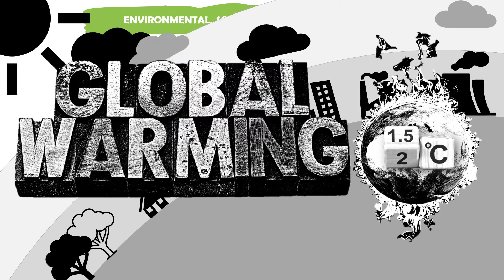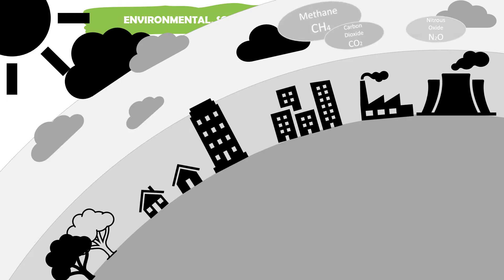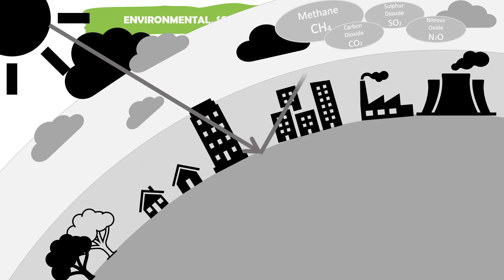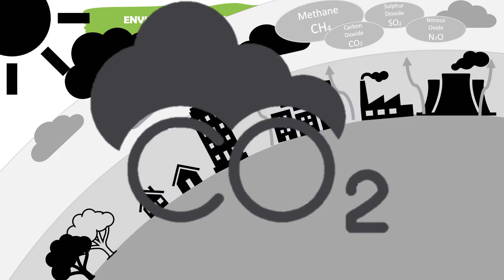Global warming is the increase in the average temperature of the Earth's atmosphere and oceans, which has been rising over recent years. The collection of carbon dioxide and other greenhouse gases in the atmosphere is the main driver of global warming. The gases absorb the sunlight reflecting off the Earth's surface and trap heat which is unable to escape, heating up the Earth and causing the greenhouse effect. CO2 has increased because of the burning of fossil fuels, which is released during the process.